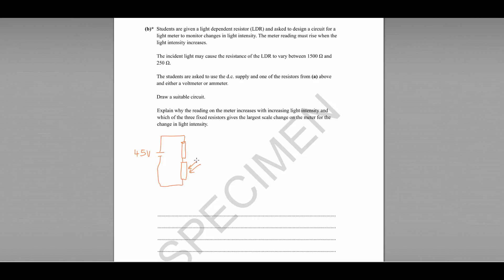If we connect a voltmeter across the LDR, as resistance increases the voltage would increase — but high resistance means low light intensity, so that's the wrong way around. We want the voltmeter reading to increase when light intensity increases. To achieve that, we connect the voltmeter across the fixed resistor instead. As light intensity strikes the LDR, its resistance decreases, skewing the ratio toward the fixed resistor and causing its voltage to increase.